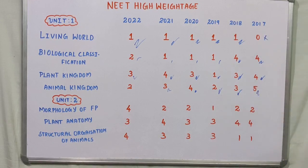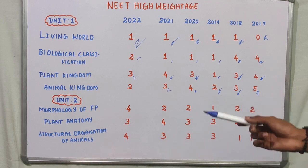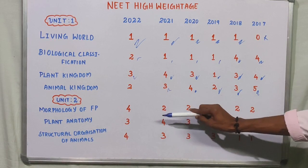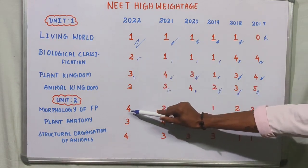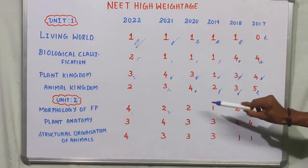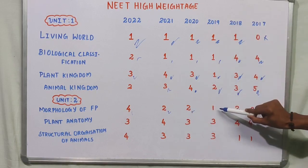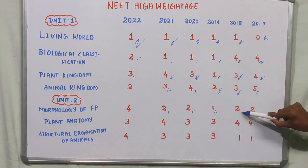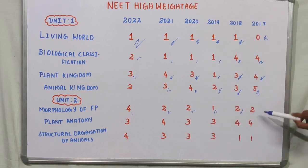This is Unit 1 summary for the last 6 years. For Morphology of Flowering Plants: in 2022 we had 4 questions, 2021 and 2020 had 2 questions each, 2019 had 1 question, 2018 had 2 questions, and 2017 had 2 questions.